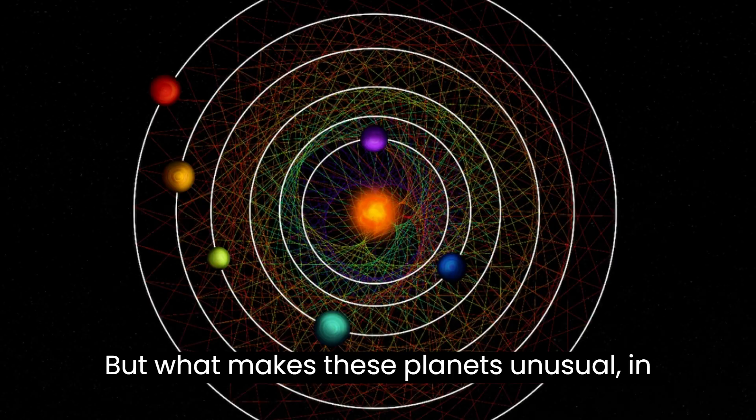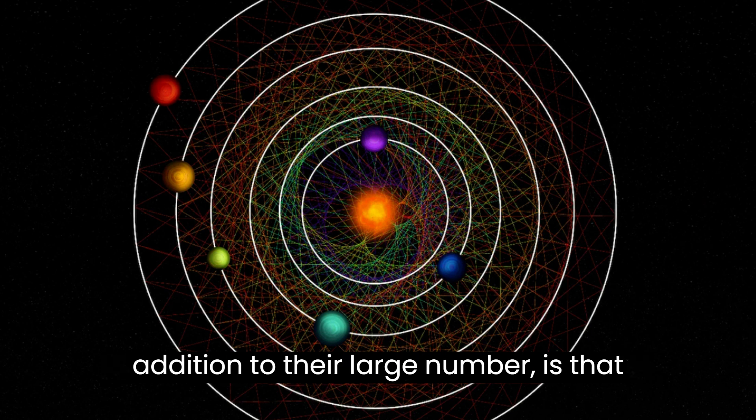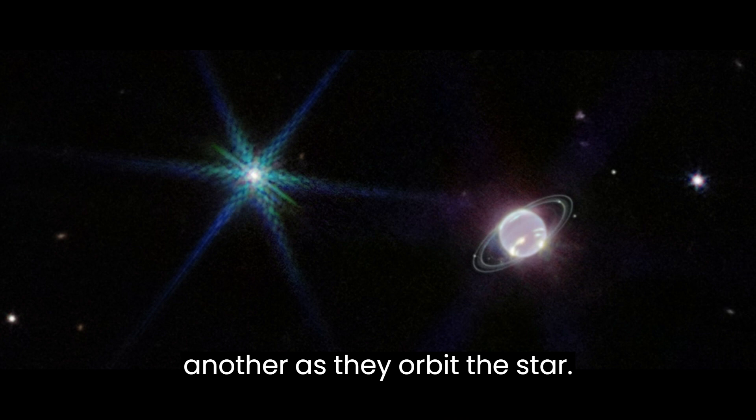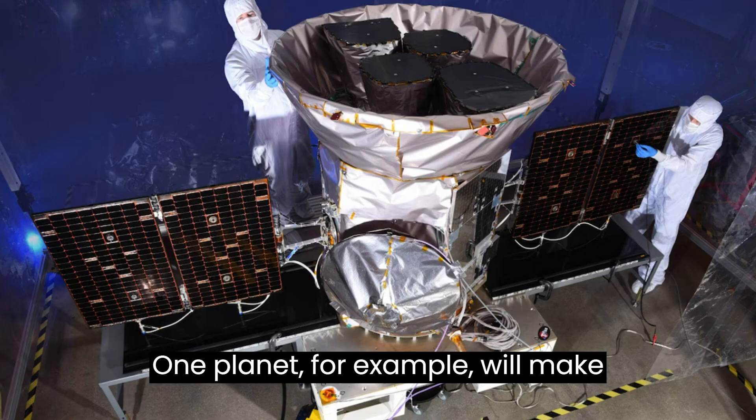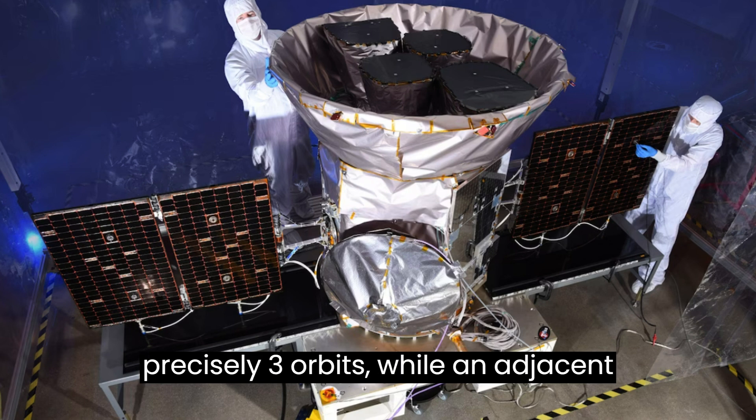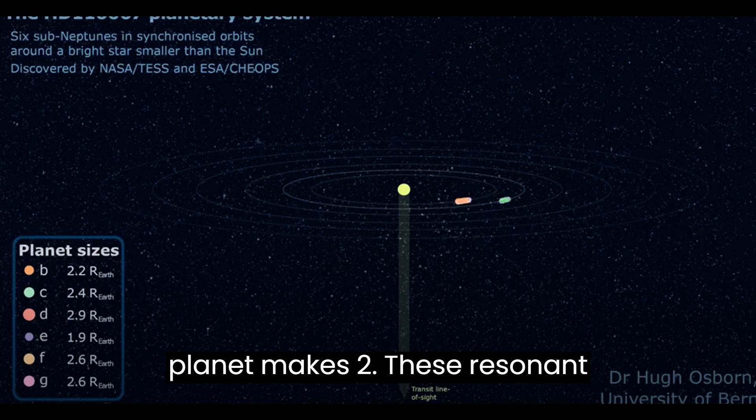But what makes these planets unusual, in addition to their large number, is that they are locked into a resonance with one another as they orbit the star. One planet, for example, will make precisely three orbits while an adjacent planet makes two. These resonant chains are very rare in nature.